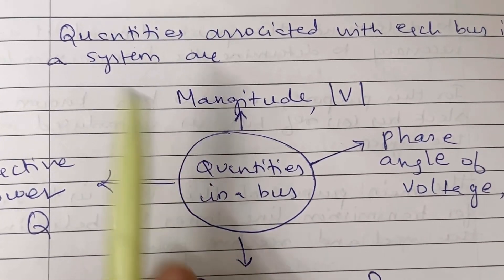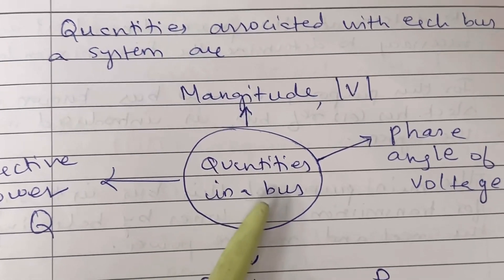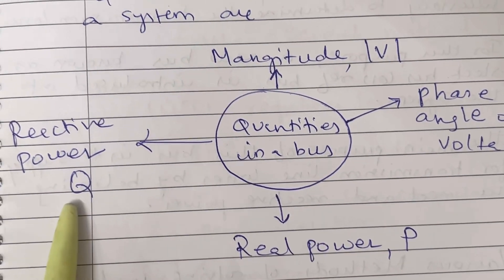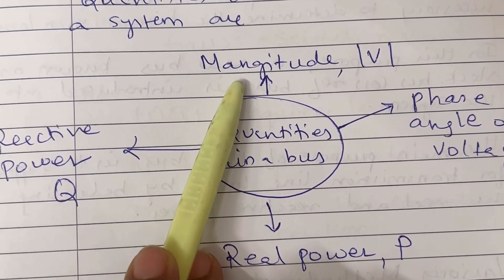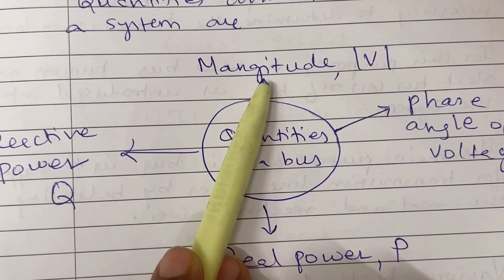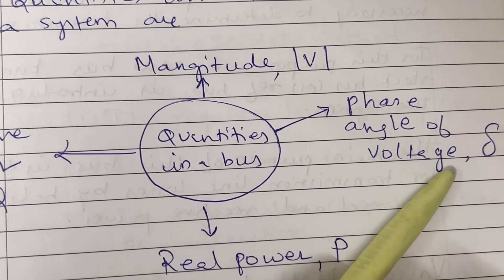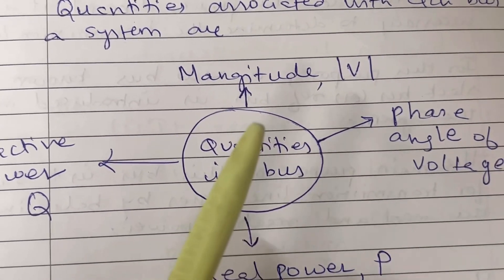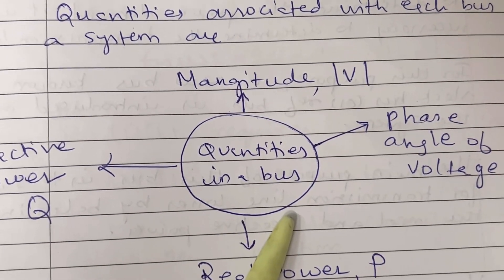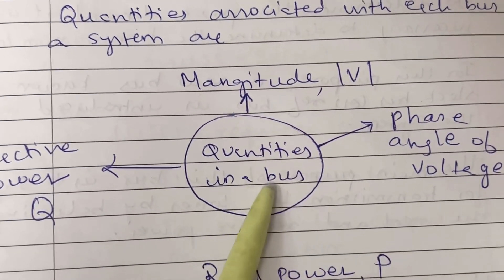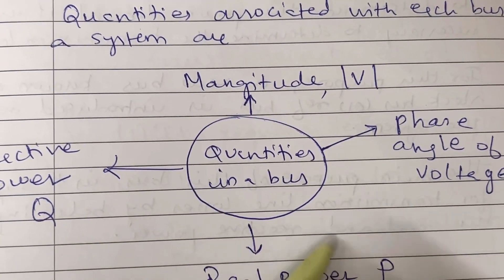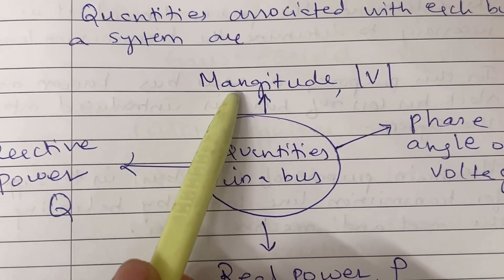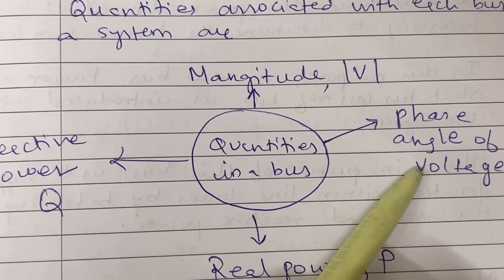The quantities associated with each bus in the system are four: P is real power, Q is reactive power, V is the magnitude of voltage, and delta (δ) is the phase angle of the voltage. Every bus — whether load bus, voltage controlled bus, or slack bus — has these four quantities: P, Q, V, and δ.